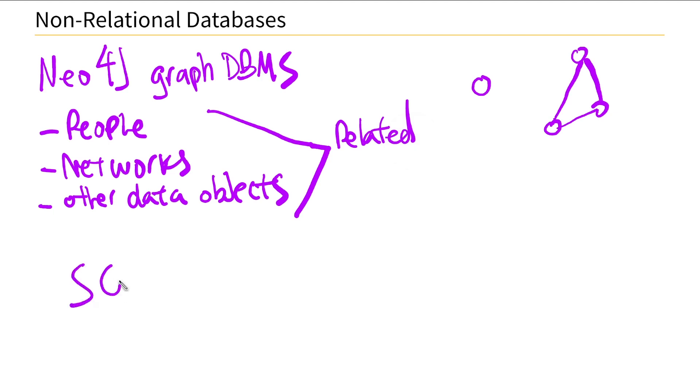So instead of using SQL - there's definitely certain times you would want to use SQL, certain times that you might not. So instead of using SQL to join tables, you can return relationships based on these nodes and these edges.